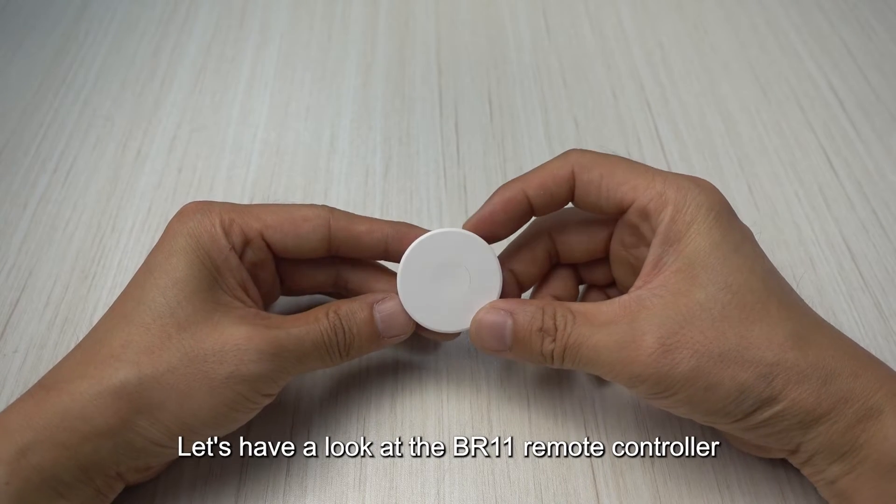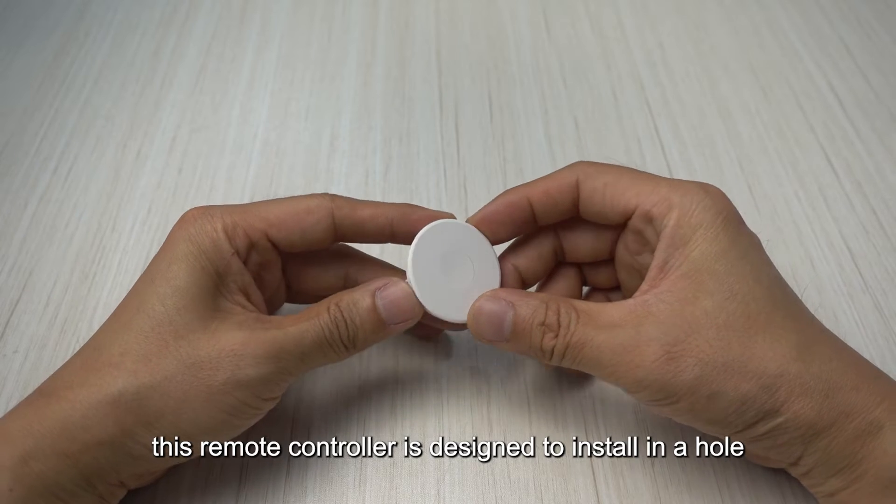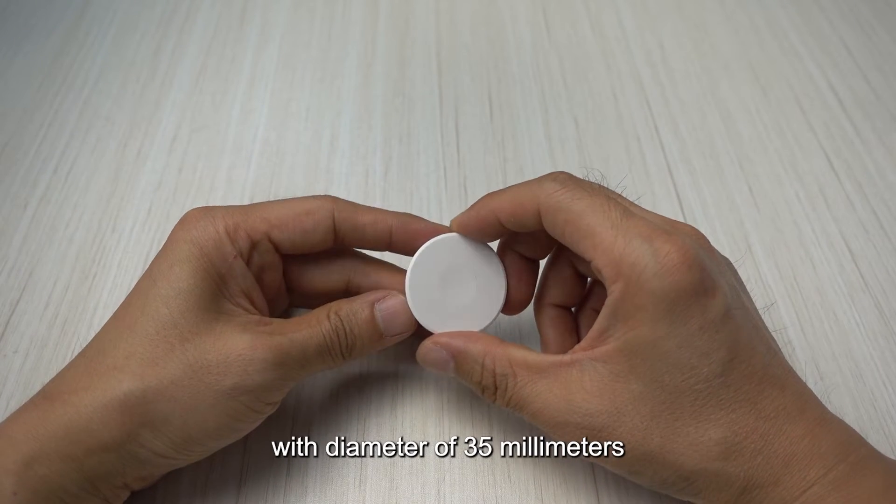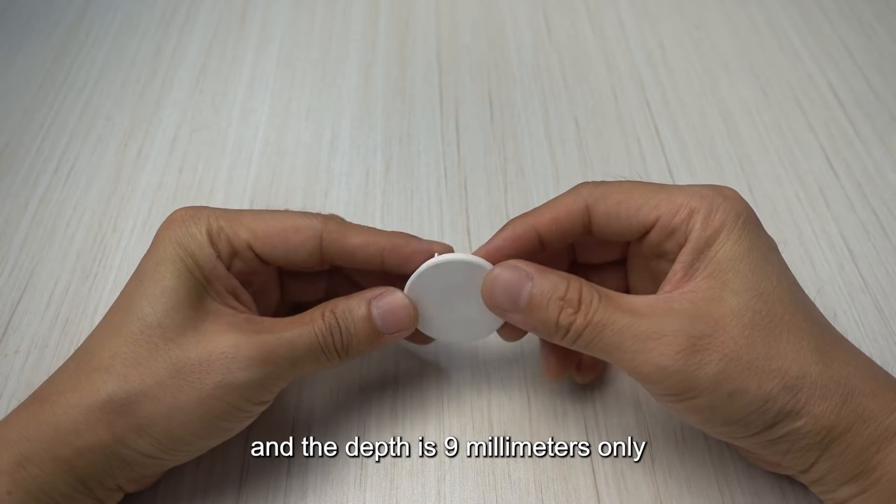Let's have a look at the BR-11 remote controller. This remote controller is designed to install in a hole with diameter of 35 millimeters and the depth is 9 millimeters only.